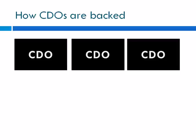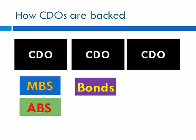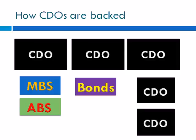Because CDOs still had some risk to them, they had to have some collateral in case they went under. Investment bankers would use mortgage-backed securities, asset-backed securities, or even bonds to serve as collateral for CDOs. Some investment banks even had other CDOs serving as collateral for their CDOs — it's complicated, but CDOs aren't exactly an easy thing to understand.